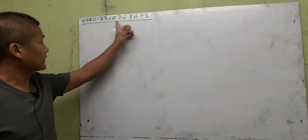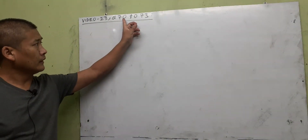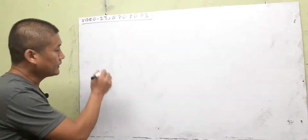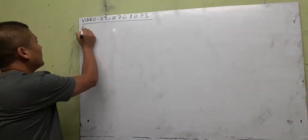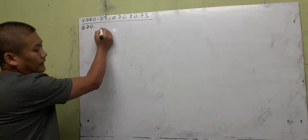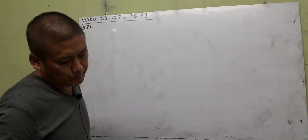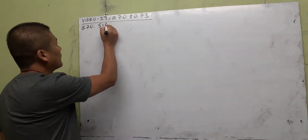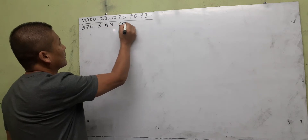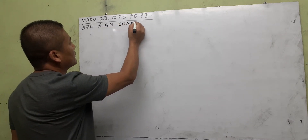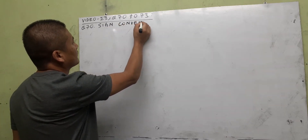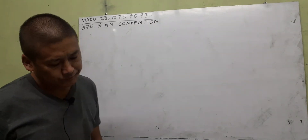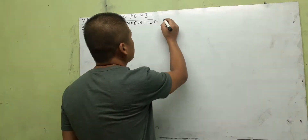In this class we'll discuss questions 70 to 73 on your tissue note. Go to question number 70 — this deals with sign convention, or new Cartesian sign convention.